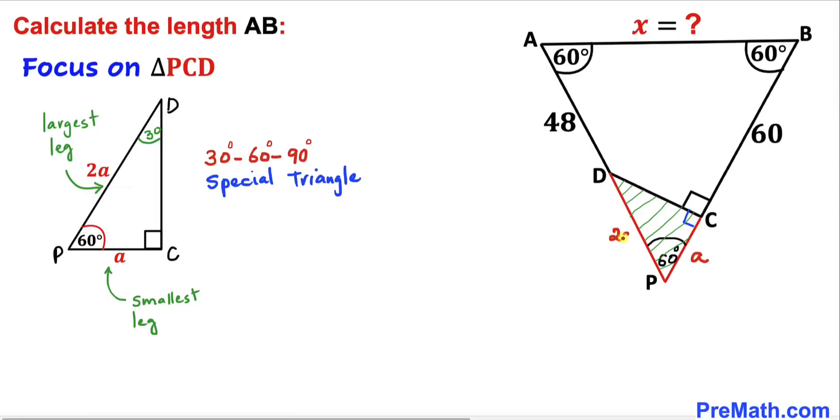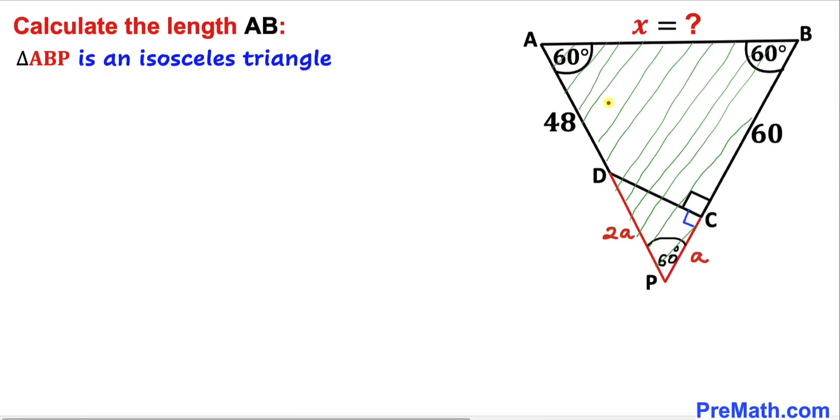Now let's focus on the big triangle ABP. This is an isosceles triangle since this angle equals that angle. Therefore, side length AP must equal side length BP.